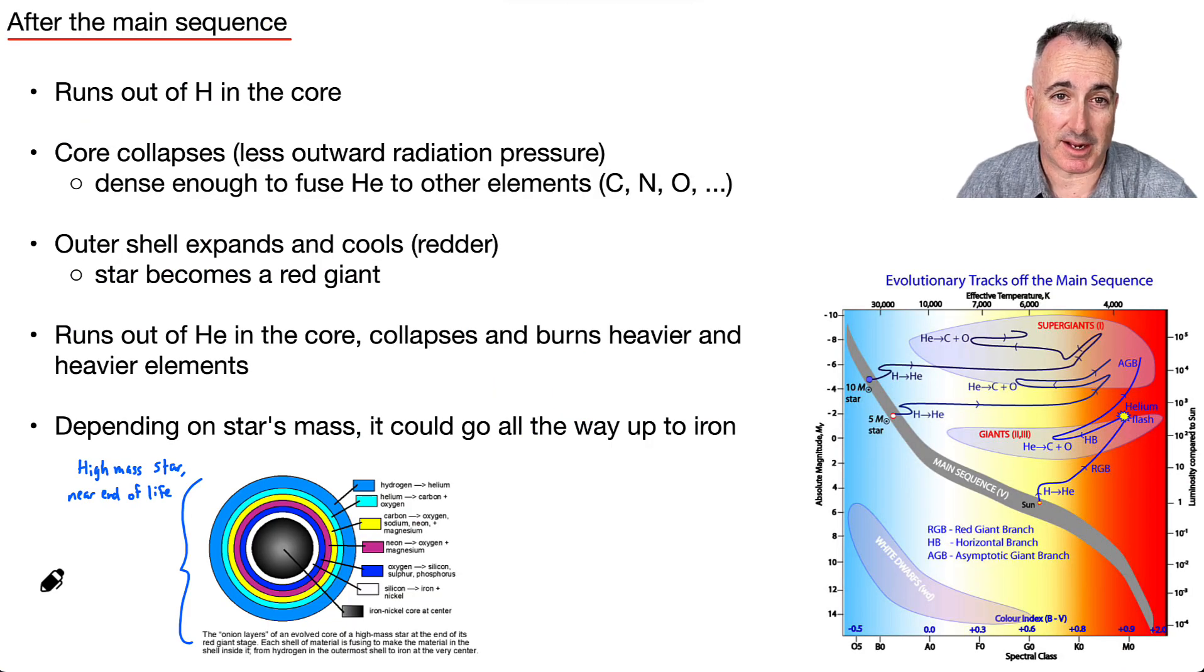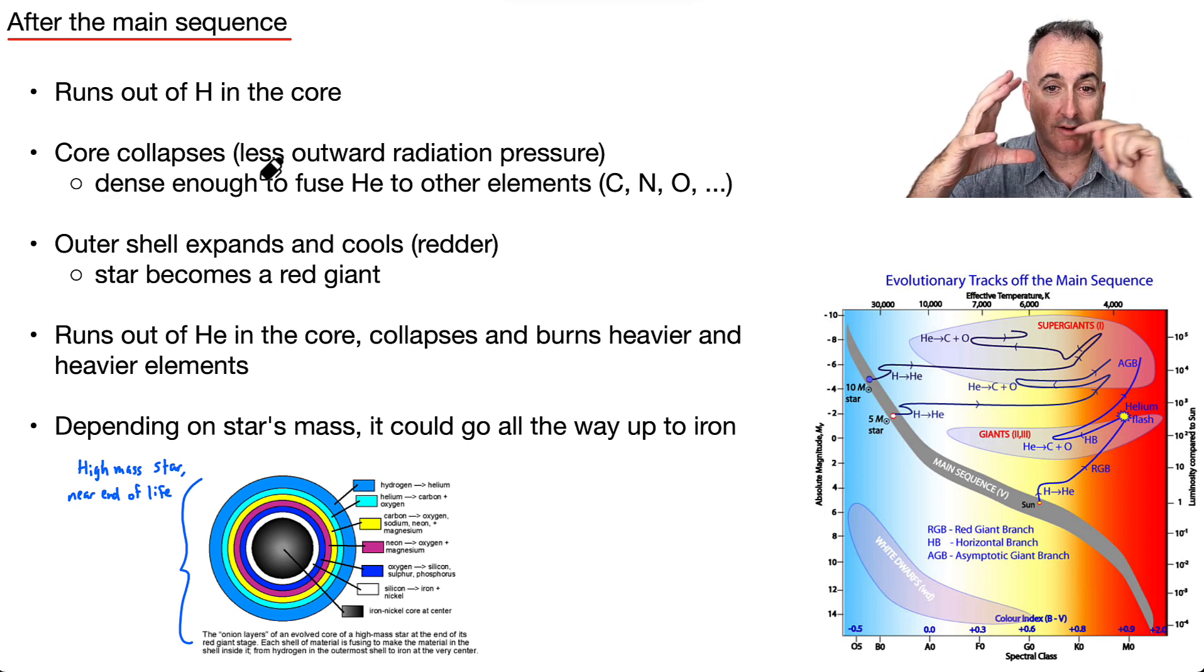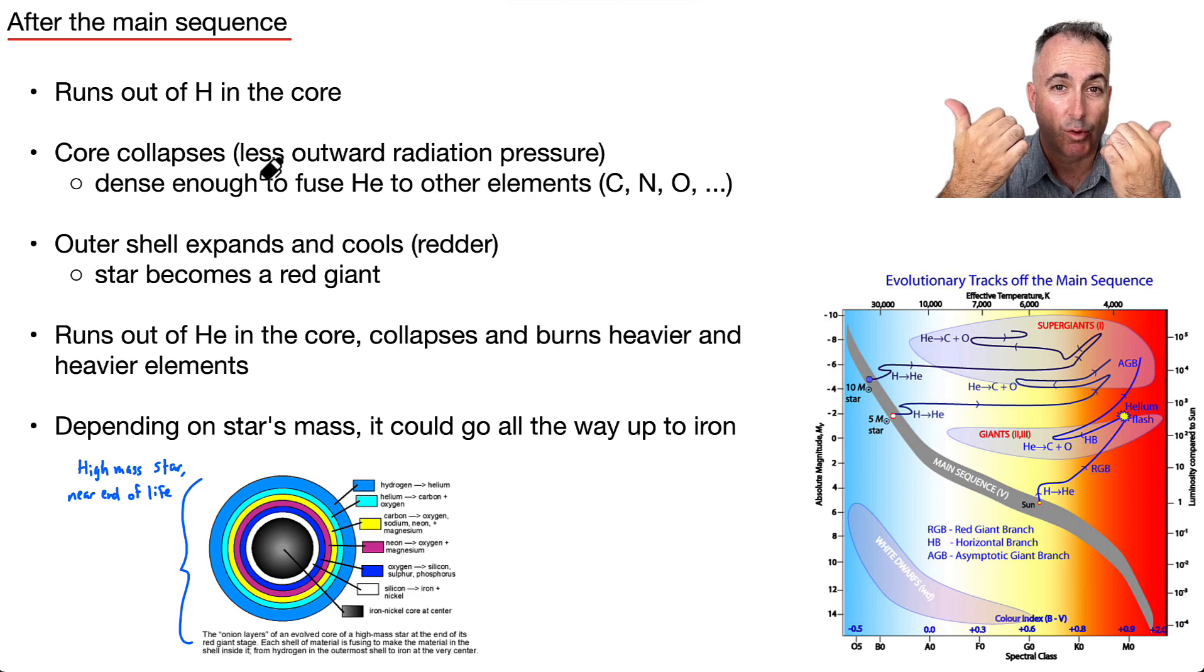All right. So what happens after the main sequence? Well, it depends where it sits. But in general, here's what happens. Now, there's a lot of notes here. Don't worry. I'm just going to try to explain it. So what happens is this. Can you imagine it's run out of hydrogen in the core? Well, if it doesn't have that outer radiation pressure, what happens? Well, gravity is still acting inwards. So it can't really push outward. So what happens? Gravity wins. So it compresses. So that's why the core collapses.